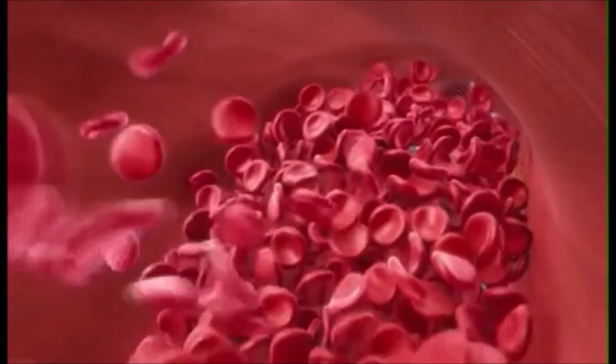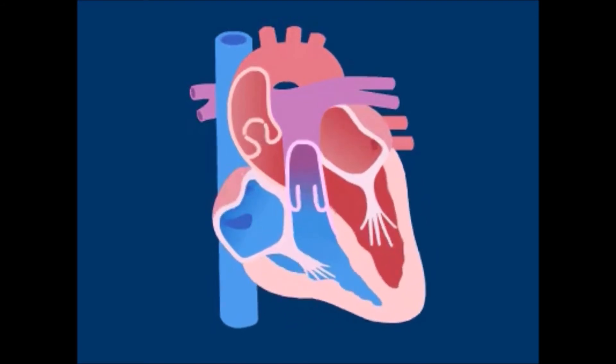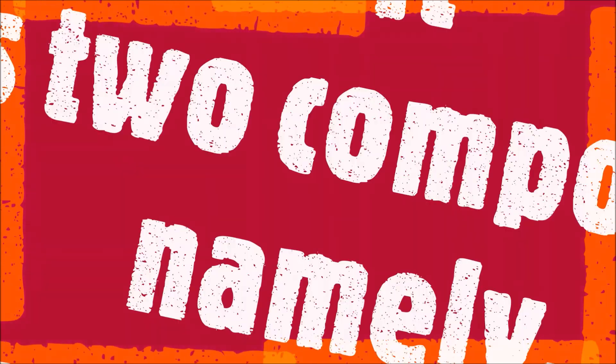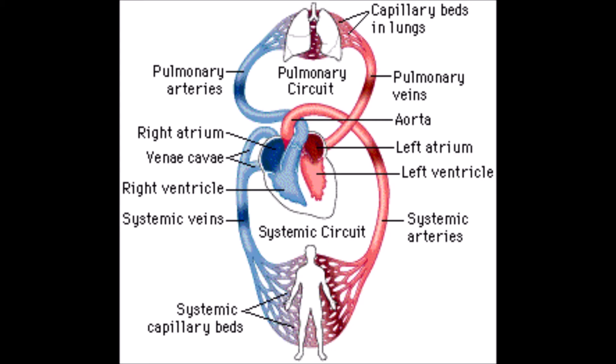Since the blood enters the heart twice, this is called double circulation. Double circulation includes two components: pulmonary circulation and systemic circulation. Pulmonary circulation is when blood passes from the heart to the lungs and back, involving the pulmonary artery and pulmonary vein. Systemic circulation is when blood passes from the heart to various other parts of the body and comes back to the heart.